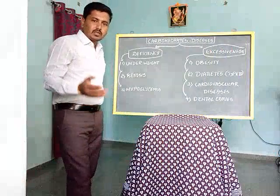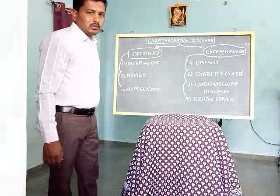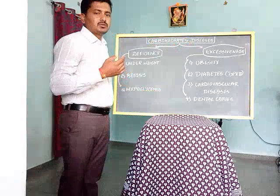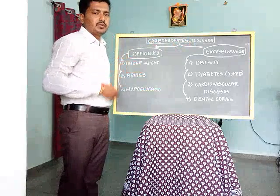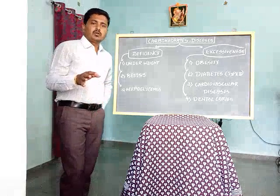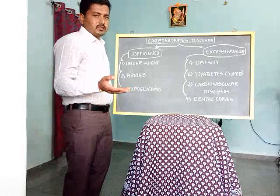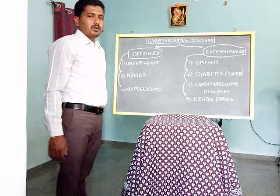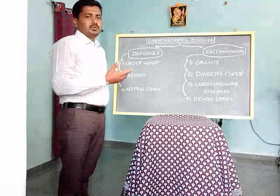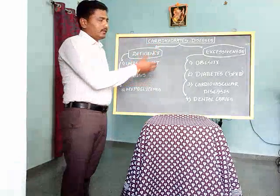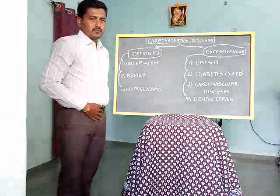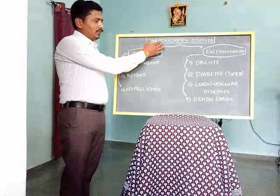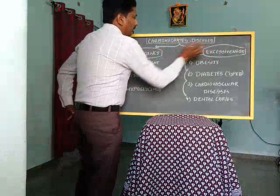Good morning friends. We will start with one more slide reading — carbohydrate and its diseases. What is the relation between excessive or deficiency of carbohydrate and diseases? In previous classes we looked over Unit 2 on carbohydrates, discussing digestion, absorption, and metabolism. Today we start with a new heading: carbohydrate and its diseases, broadly classified as deficiency of carbohydrate and excessiveness of carbohydrate.